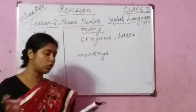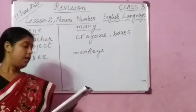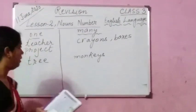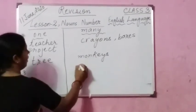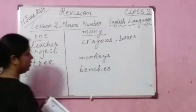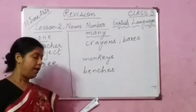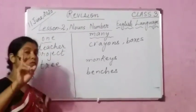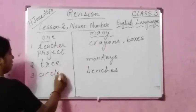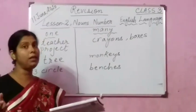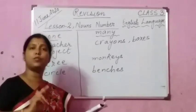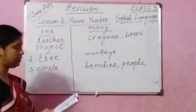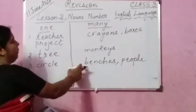We are just revising, children. Number 3: there were benches in a circle for people to sit. Benches fall under the many category. Circle is one — keep that in mind. Now, people is the plural form of person; person is one and people are many. So circle is singular, and benches and people are plural.